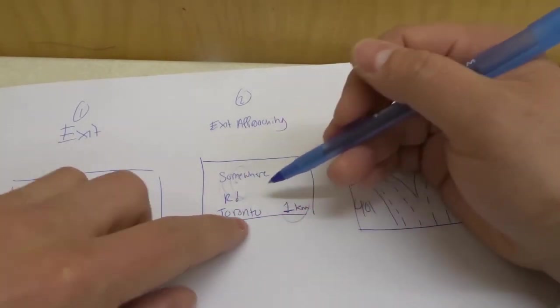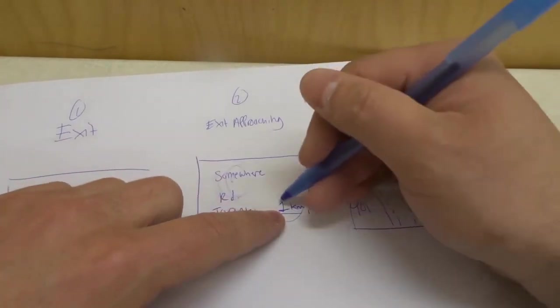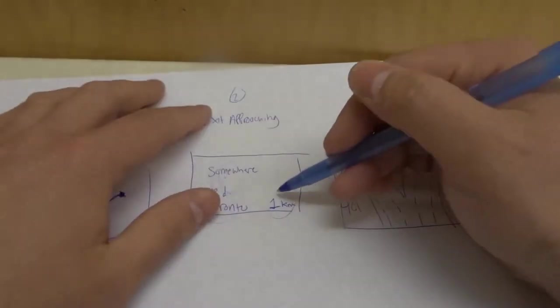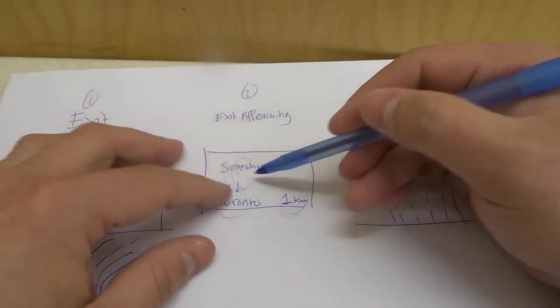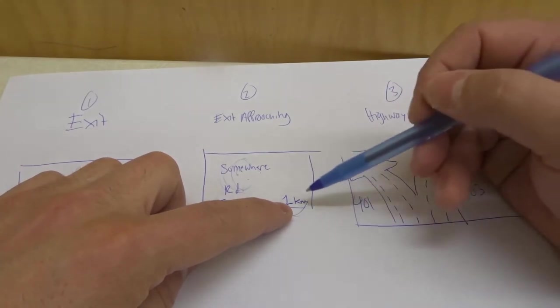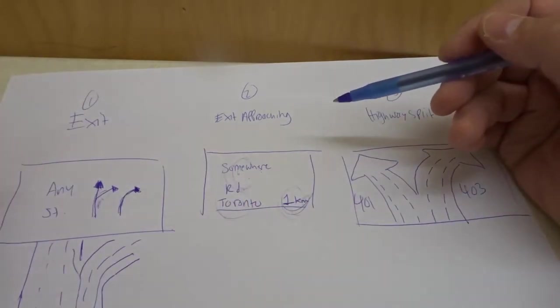Let's just say it's in Toronto and how many kilometers away you are from it. So in this case it would be, it's in one kilometer. So by, if you know you have to exit on somewhere road, you can get into the closest lane to the exit because you know you're going to exit in one kilometer.